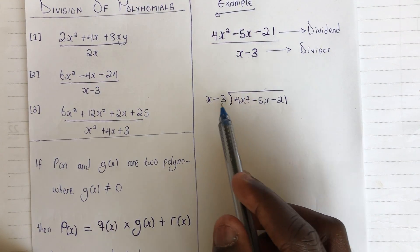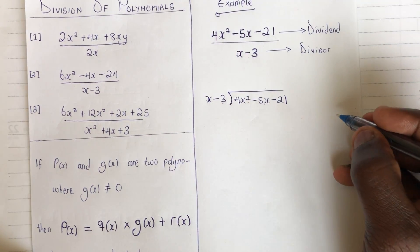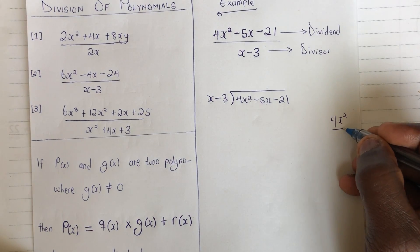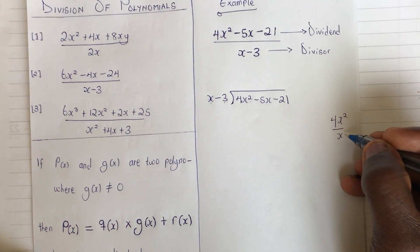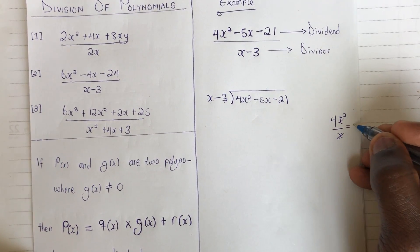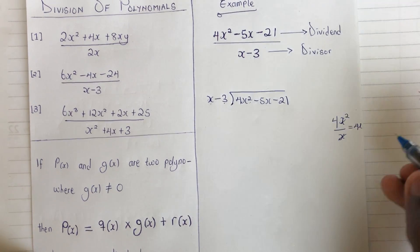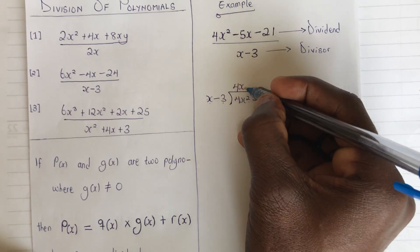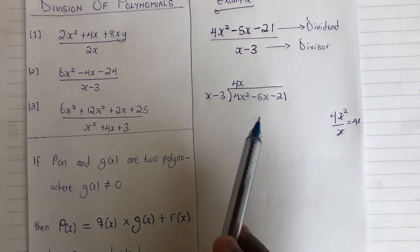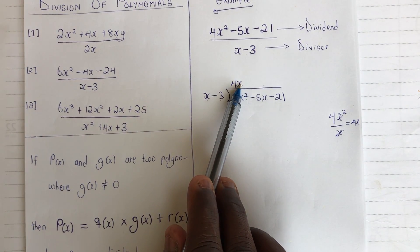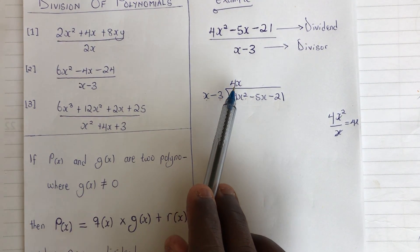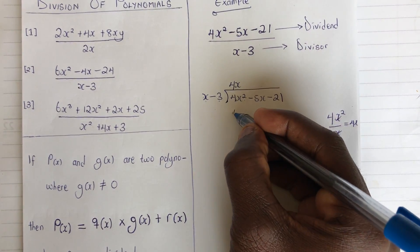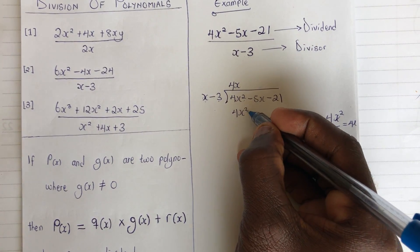The first thing we do is take the first term, which is 4x squared, and divide it by x. So 4x squared divided by x — this will cancel one x, leaving us with 4x. Write 4x at the top. Now use 4x to multiply everything in the divisor: 4x times x gives us 4x squared, which we write below.